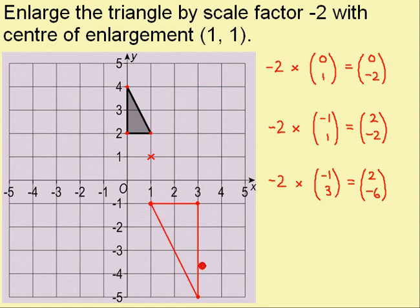This is my finished enlargement. Now the lovely thing about this kind of question is that there's a really nice way of checking your answer. If you join each corner on the small triangle to the corresponding corner on the large triangle, all the lines should cross through the centre of enlargement. It looks like this. And you can see that my green lines all cross through the centre of enlargement. So I can see that this is in the correct position.